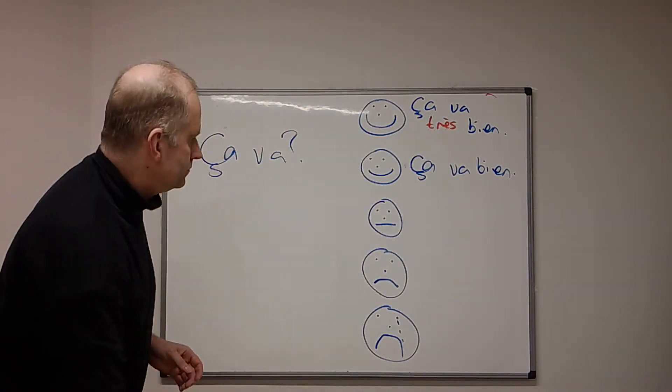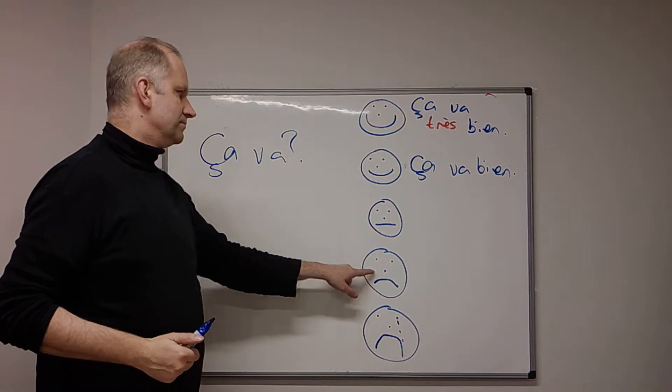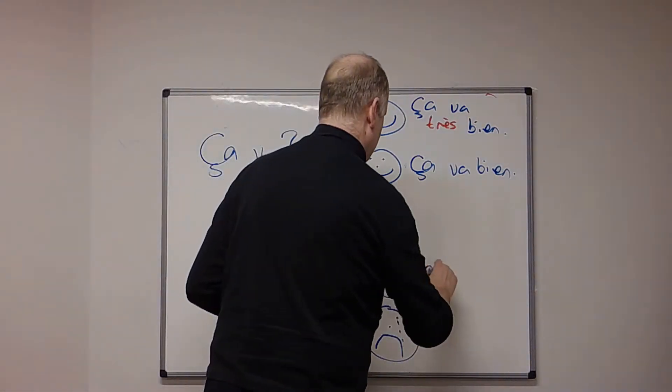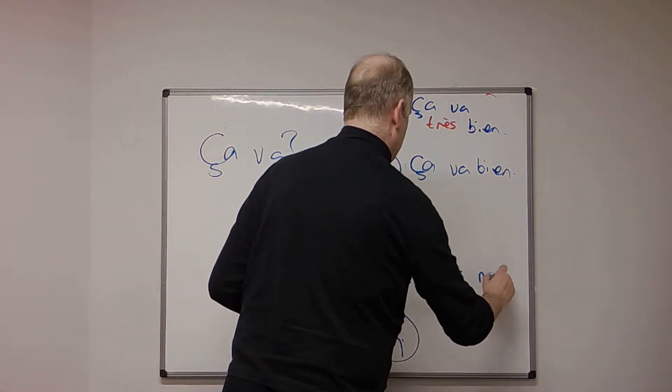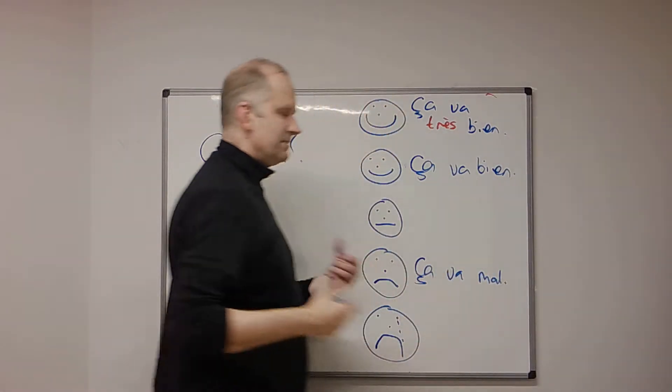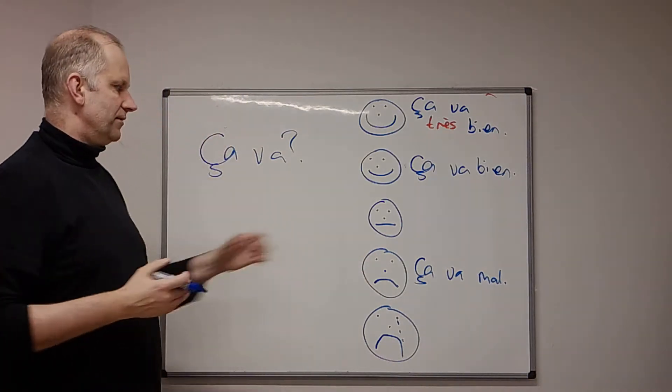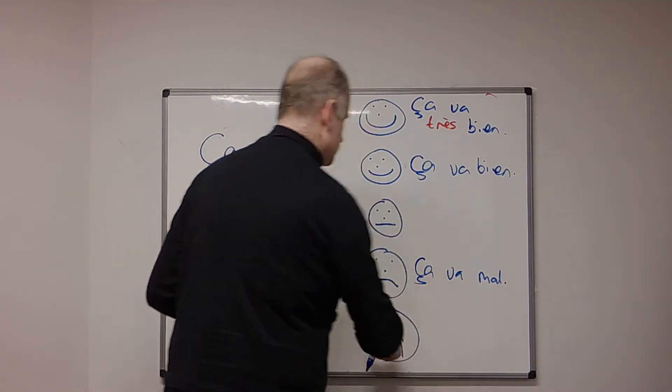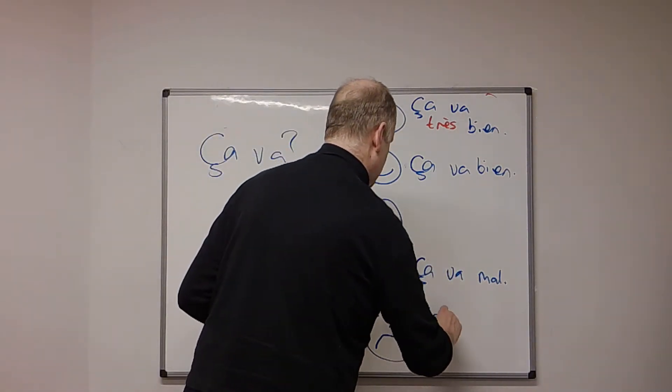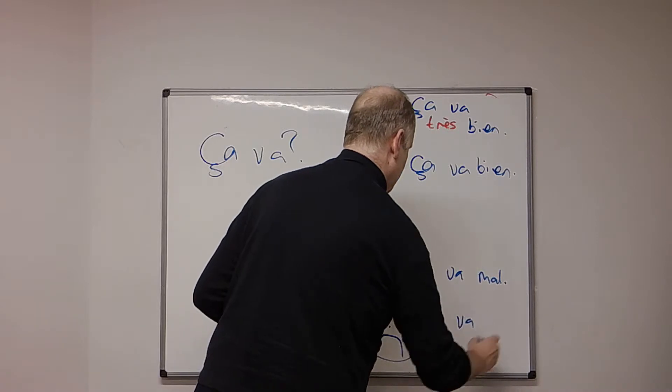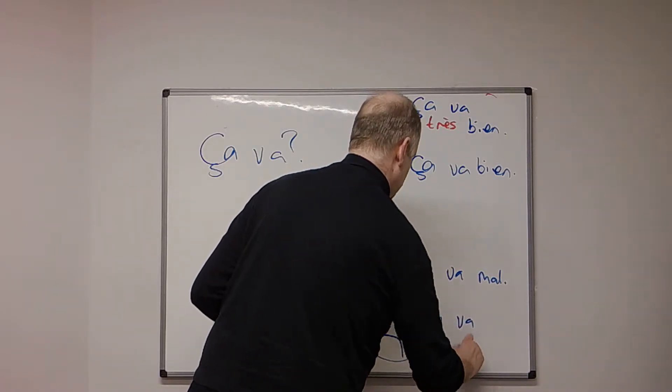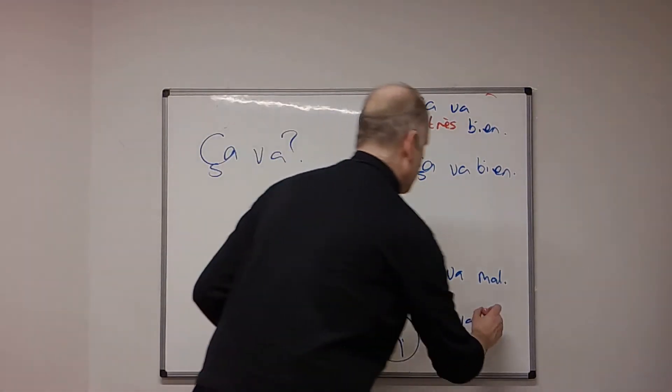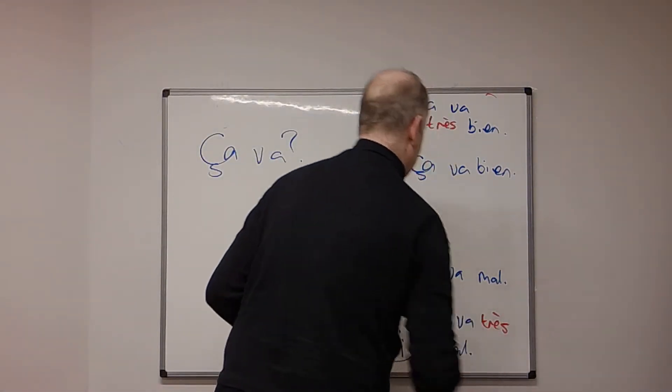Now, this one is, it's going badly. So, bad. So, ça va mal. So, mal doesn't actually mean bad, it means badly. But it's sort of a question of saying bad. And this one, it's, again, it's going to be similar to that. Ça va, and then mal. And if you remember the word for very, très. So, ça va très. Ça va très mal.